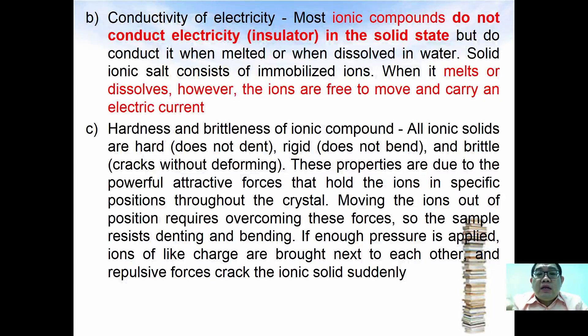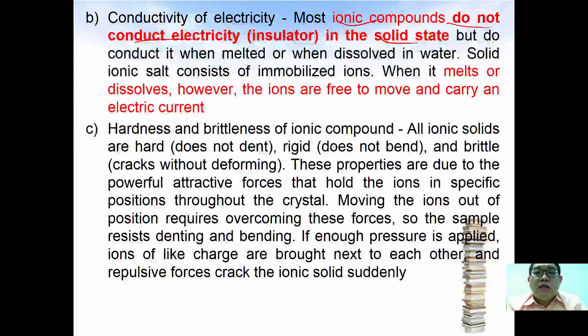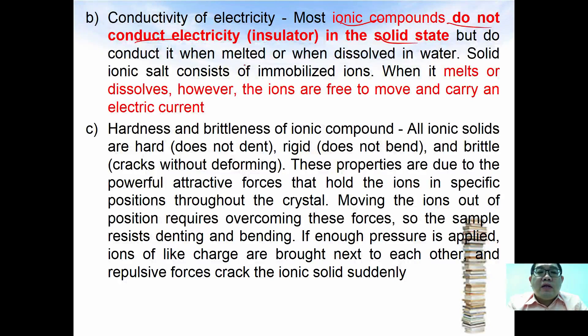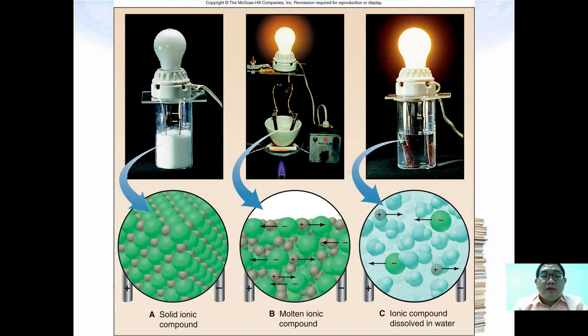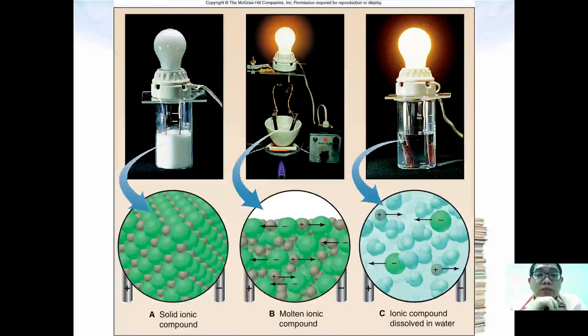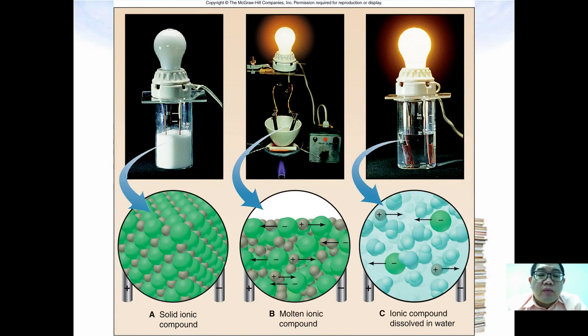As for electrical conductivity, most of the ionic compounds in solid do not conduct electricity, but do conduct when molten or when dissolved in water. Solid ionic salt contains immobilized ions. When it melts or dissolves, the ions are free to move and carry electrical currents. In the diagram here you can see that when you have ionic salt as a solid, all of them are arranged in three dimensional arrangement where all the ions are not free to move. However, once this salt is molten, they will have free moving ions around them and this will enable them to conduct electricity, or you dissolve them in water which also enables them to conduct electricity.